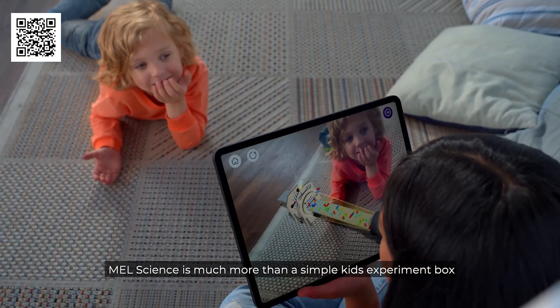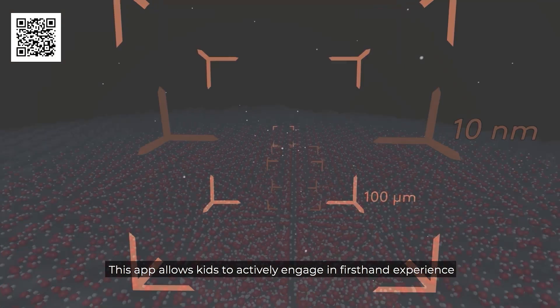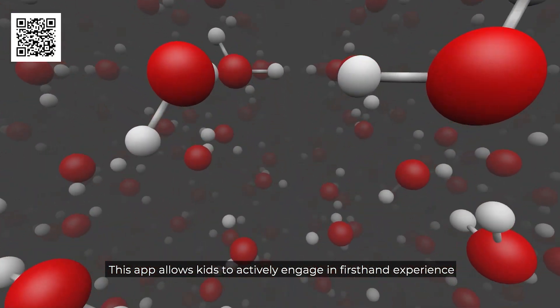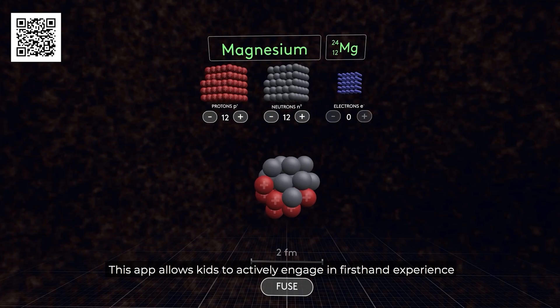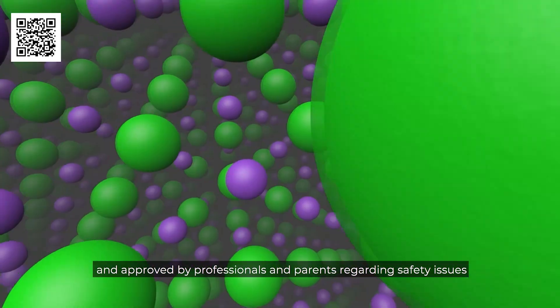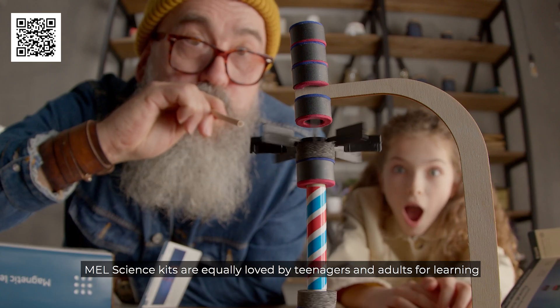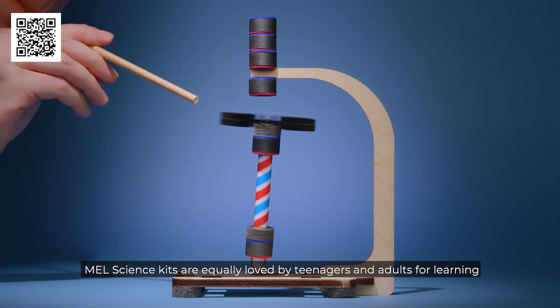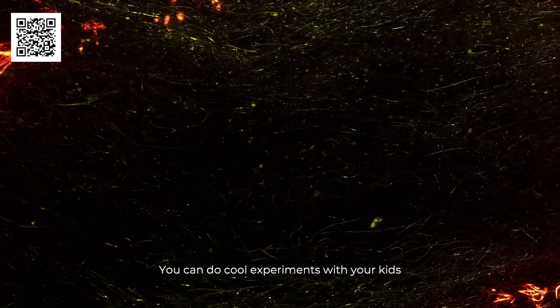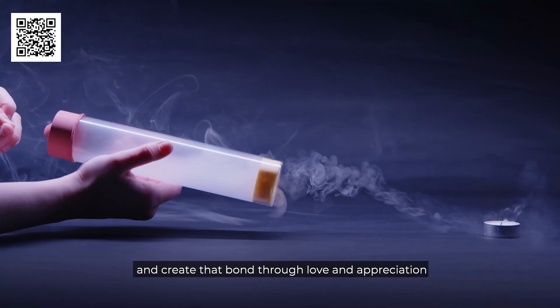Their subscriptions are for ages 5 to 16 plus and include free VR and AR lessons on the MelScience app. MelScience is much more than a simple kids' experiment box. It's an educational platform. This app allows kids to actively engage in first-hand experience. MelScience app is designed by experts and approved by professionals and parents regarding safety issues. MelScience kits are equally loved by teenagers and adults for learning. You can do cool experiments with your kids and create that bond through love and appreciation.